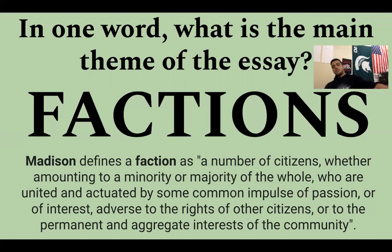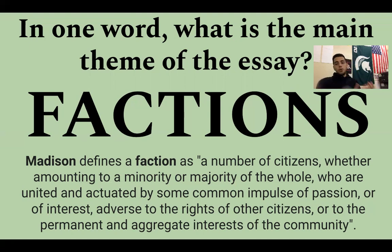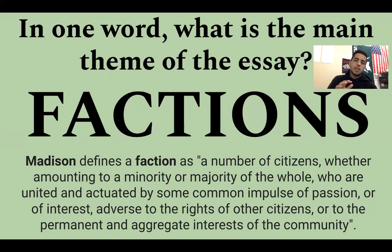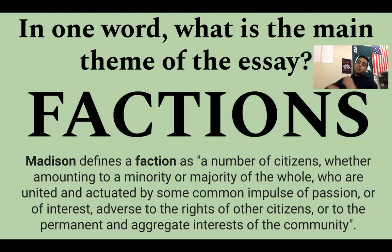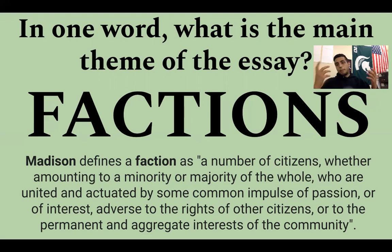So this is Madison's definition of a faction. Madison defines a faction as a number of citizens, whether amounting to a minority or a majority of the whole, who are united and actuated by some common impulse of passion or of interest adverse to the rights of other citizens or to the permanent and aggregate interests of the community. To put that into English, a faction is basically just a group of people with relatively similar ideas who want to band together and try to make that idea a reality. Factions are always going to be competing against other factions, especially factions with opposite ideas.